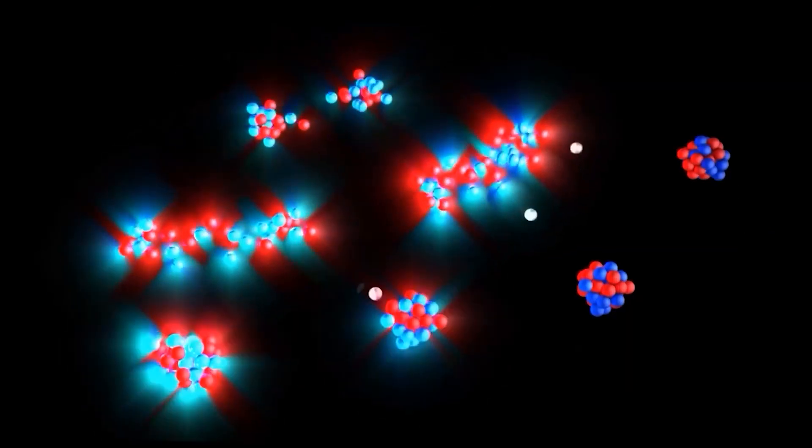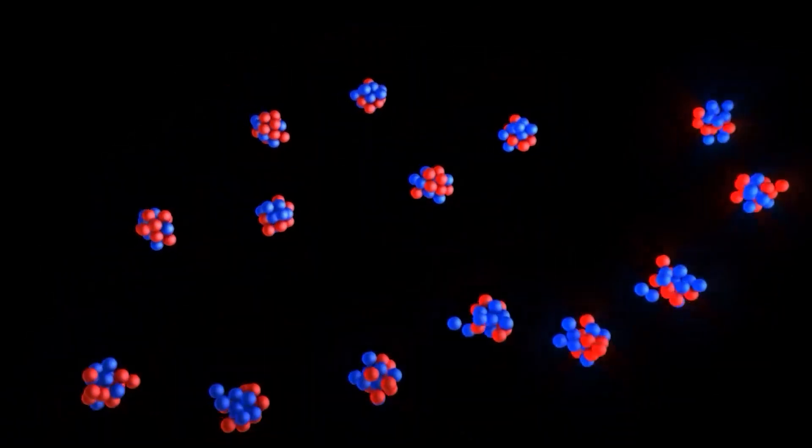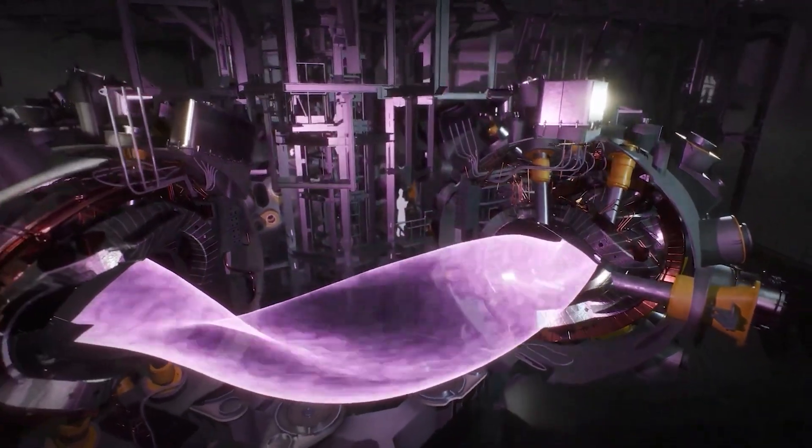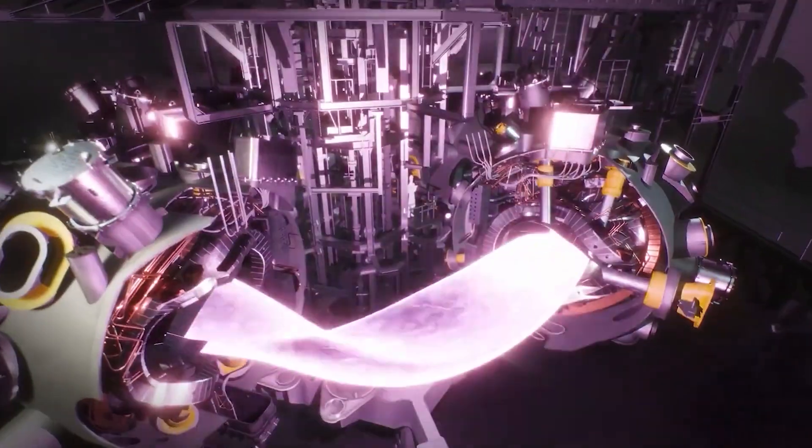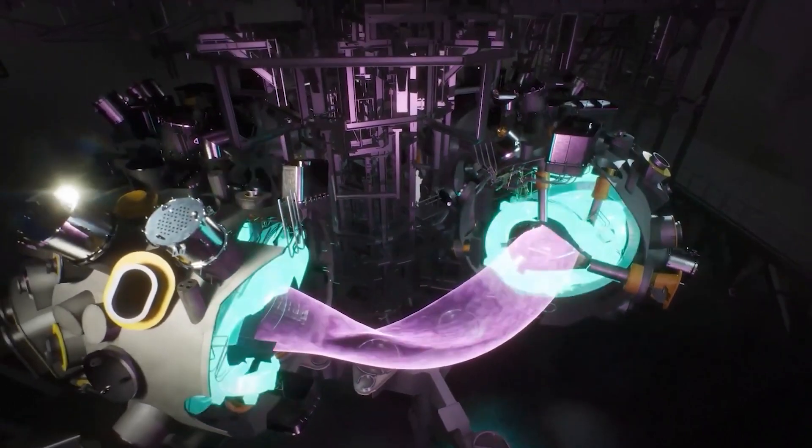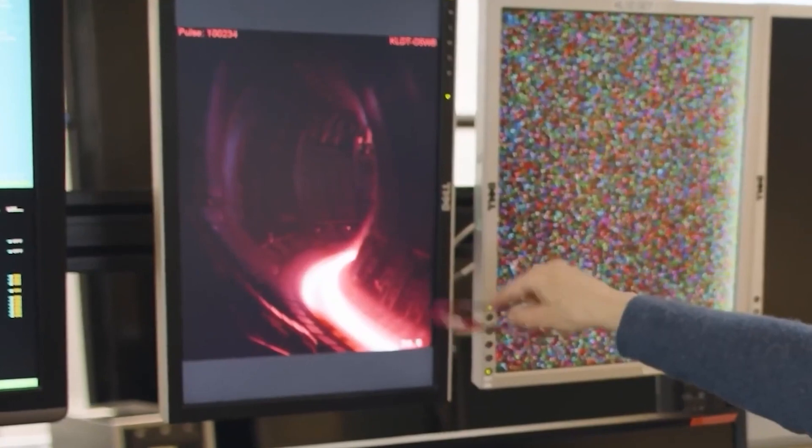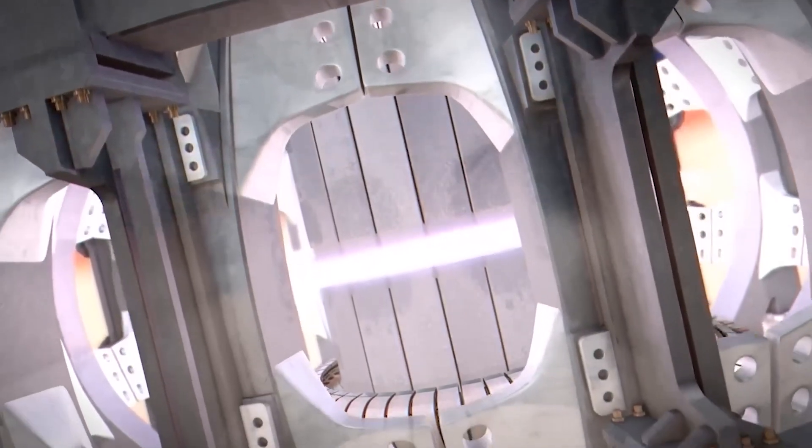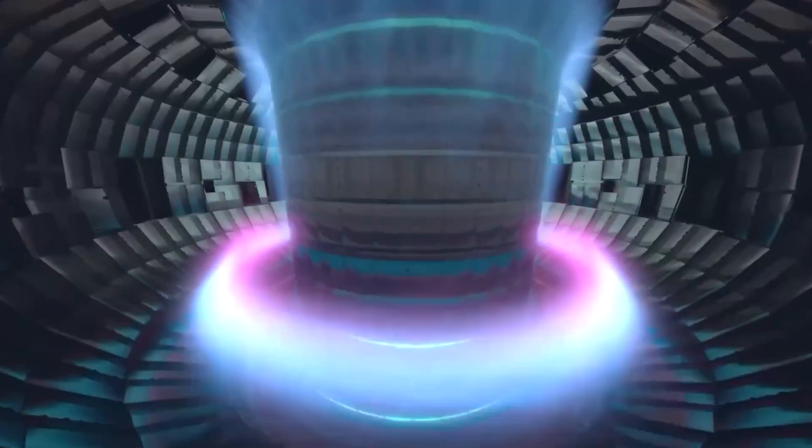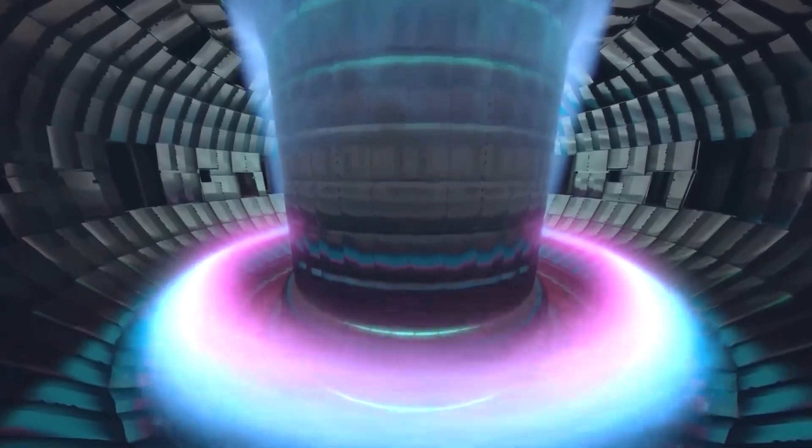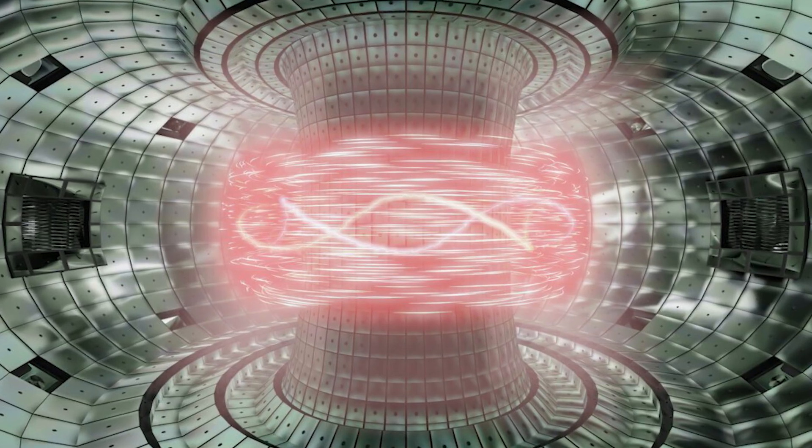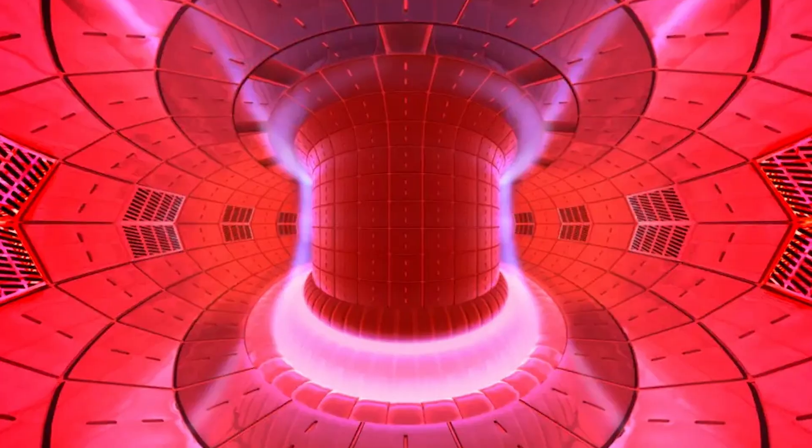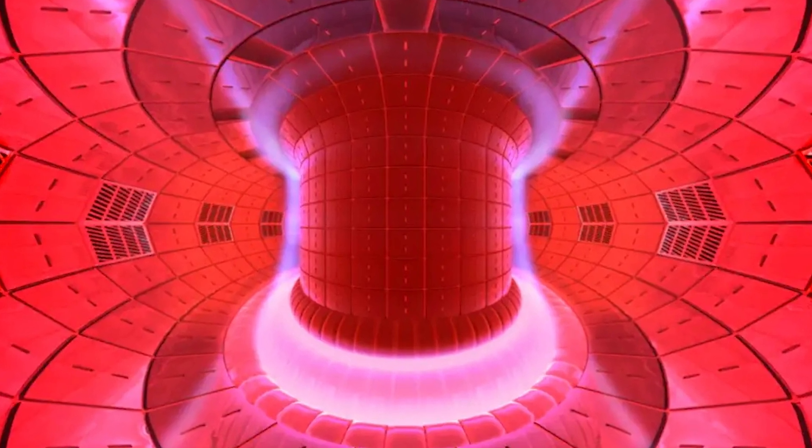A significant challenge in fusion technology lies in finding materials that can withstand the intense radiation, electromagnetic radiation, and high energy neutrons produced during fusion. The fusion chamber's first wall, which separates the plasma from the surrounding components, is particularly vulnerable to these extreme conditions. While fusion systems operate under vacuum conditions to insulate the plasma from the first wall, the intensity of radiation and particles presents a material science challenge that Helion Energy and the fusion community at large are working to overcome.